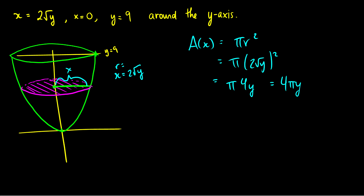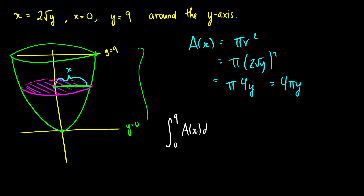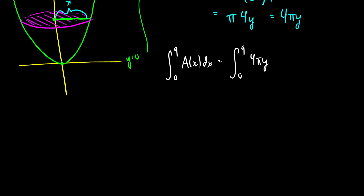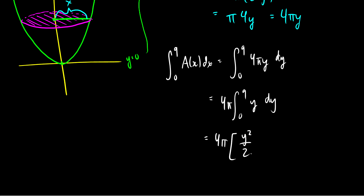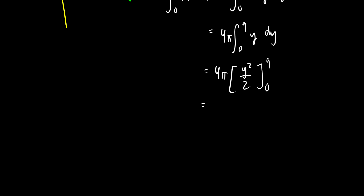Now we take the integral from y equals 0 to y equals 9 to get the volume. The integral from 0 to 9 of 4 pi y dy — pulling out 4 pi gives 4 pi times the integral from 0 to 9 of y dy. The antiderivative of y is y squared over 2, evaluated from 0 to 9. Plugging in 9 gives 4 pi times 81 over 2, which equals 162 pi.